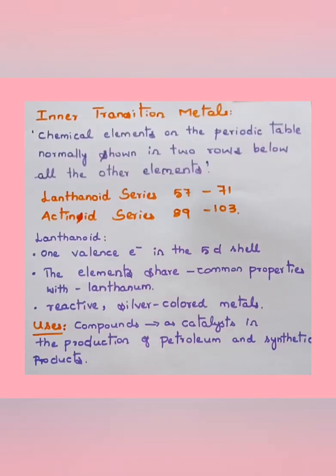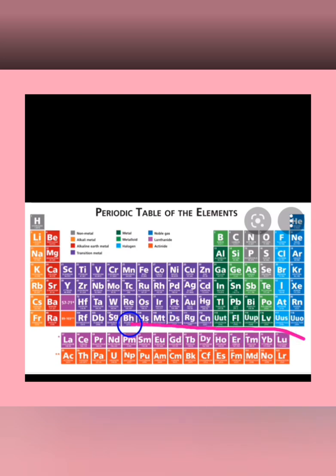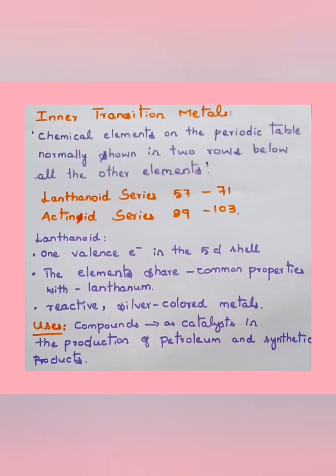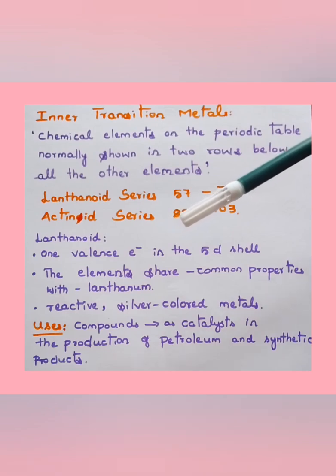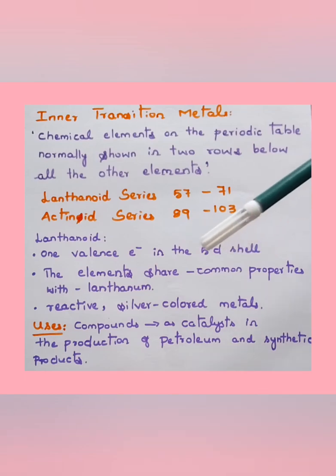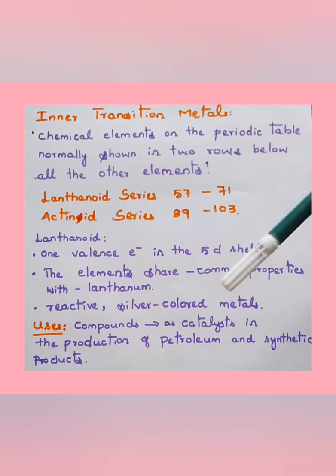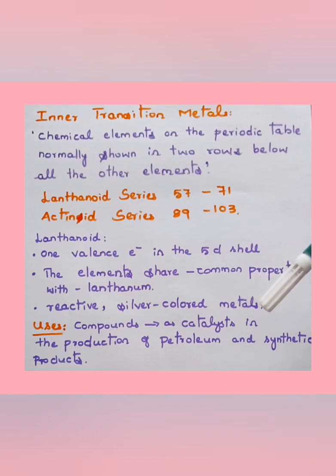Inner transition metals are chemical elements normally shown in two rows below all the other elements in the periodic table. First, lanthanides: they have one valence electron in the 5d shell, share common properties with lanthanum, and are reactive silvery-colored metals. The compounds of lanthanides are used as catalysts in the production of petroleum and synthetic products.